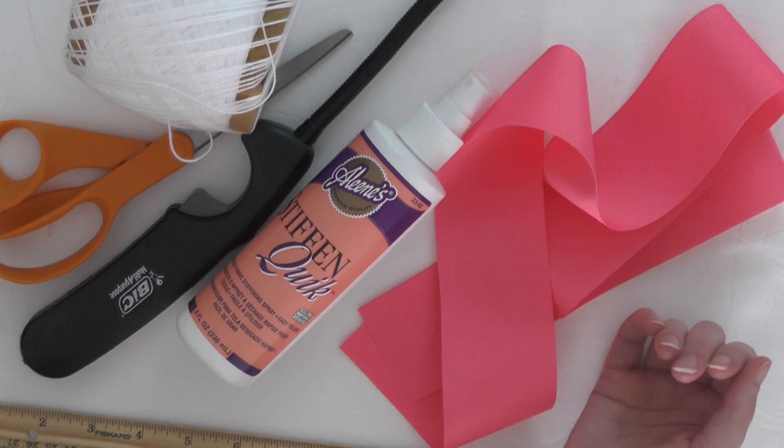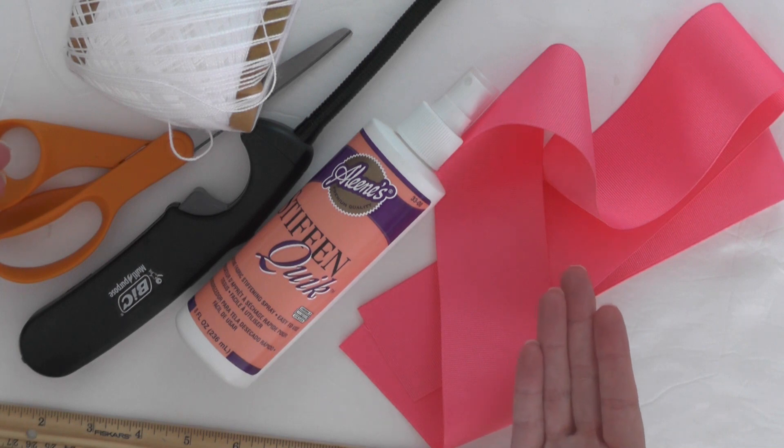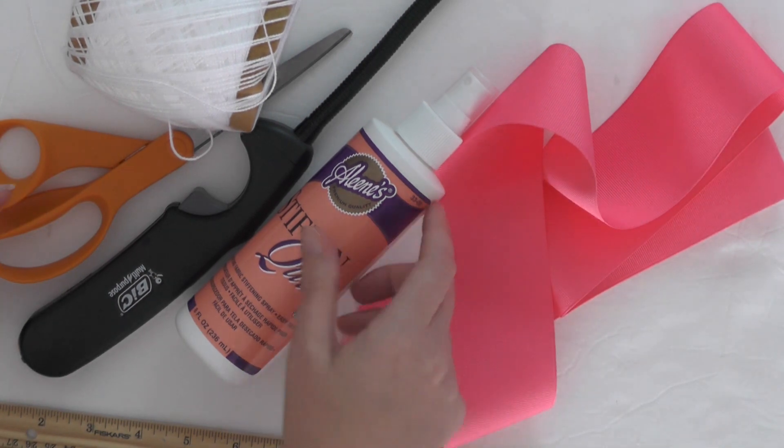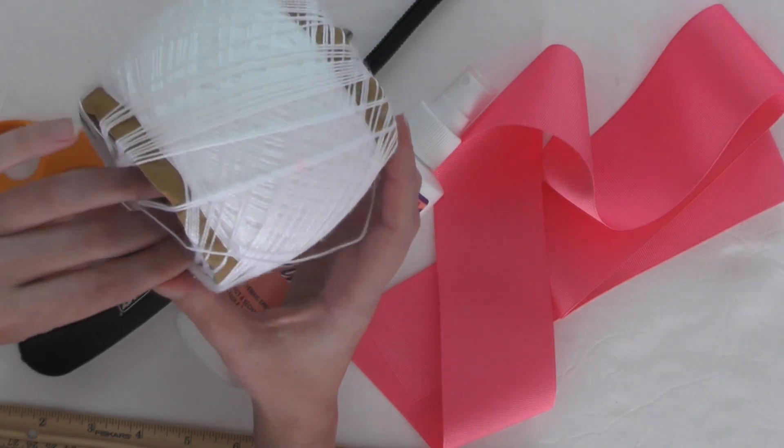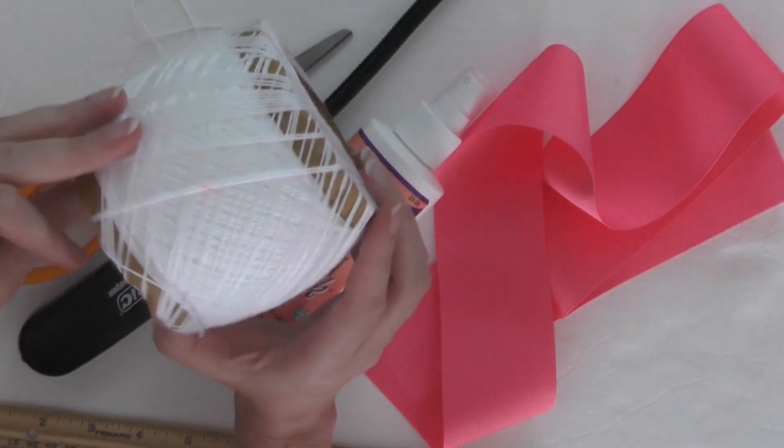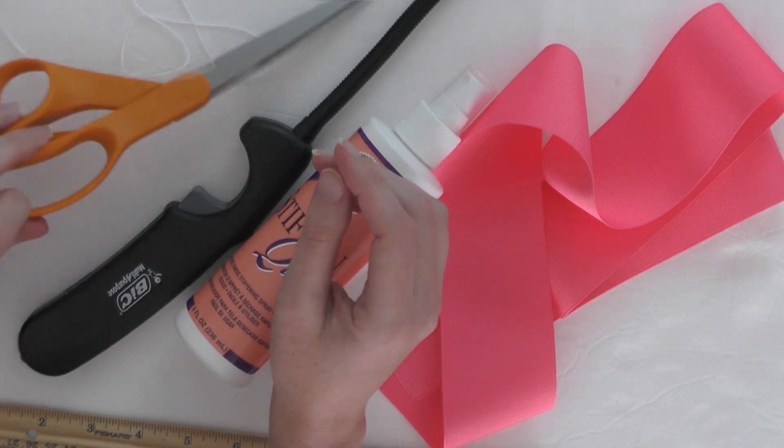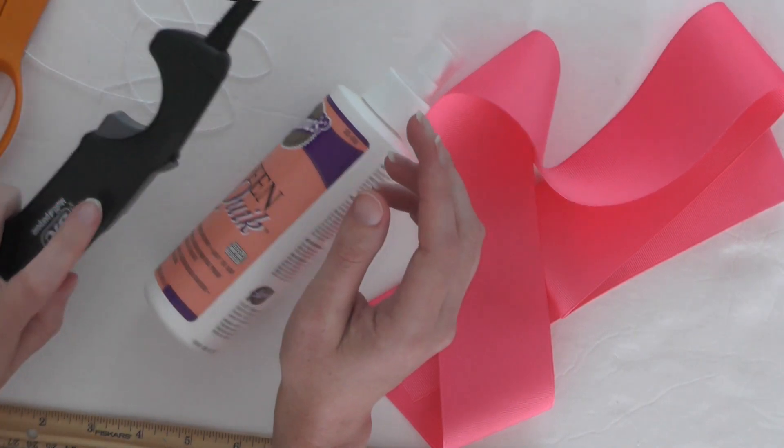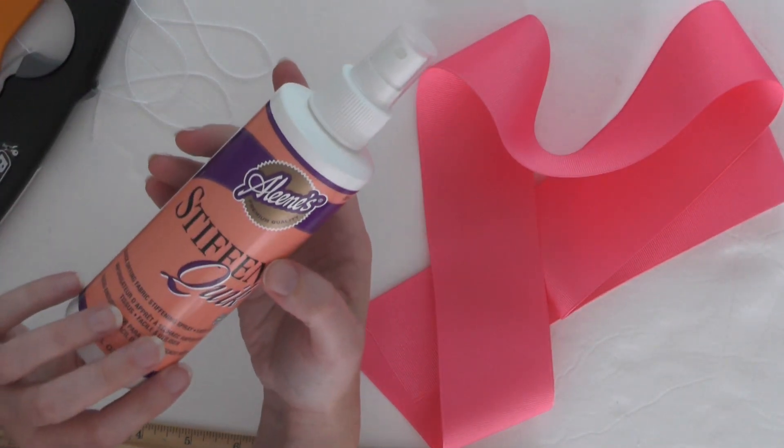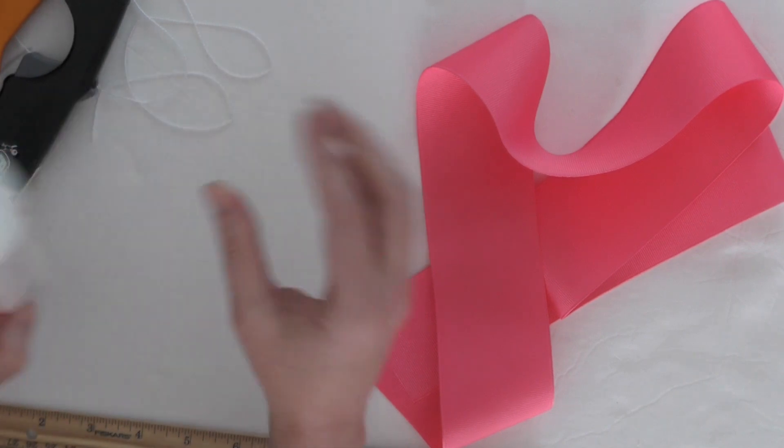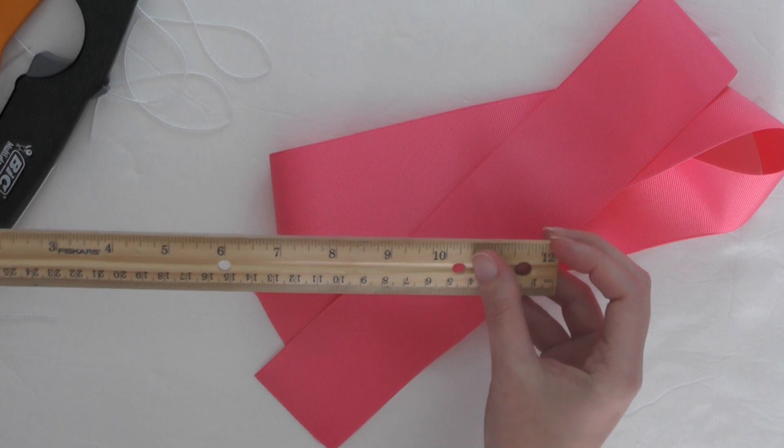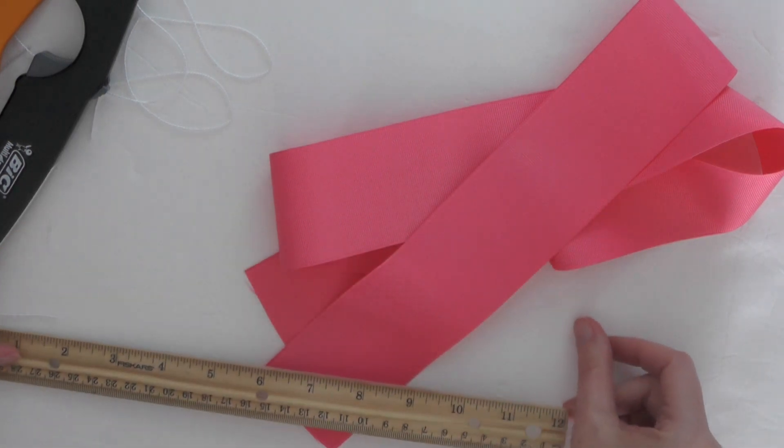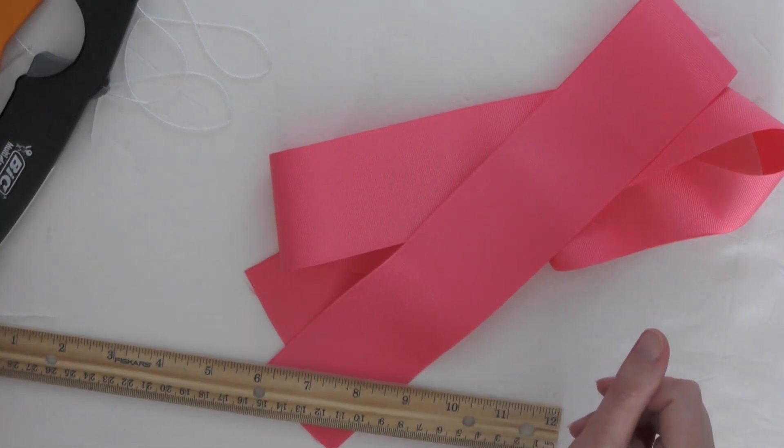I have the list of usual suspects. I've got my thread. I'm going to be using the crochet thread. I've also got my scissors, my lighter, my awesome stiff and quick, that 2-inch ribbon. I'm also going to have my ruler handy. My hot glue gun is plugged up and we are ready to roll.